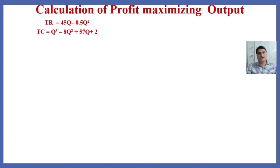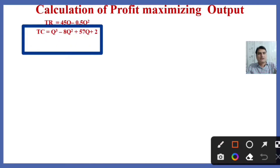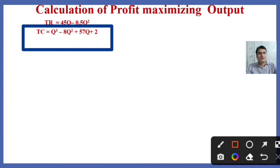This is the total revenue function and total cost function. The total revenue function stands as 45Q minus 0.5Q squared. The total cost function is Q cubed minus 8Q squared plus 57Q plus 2. So total revenue and total cost functions are given, and we have to find the profit maximizing output.